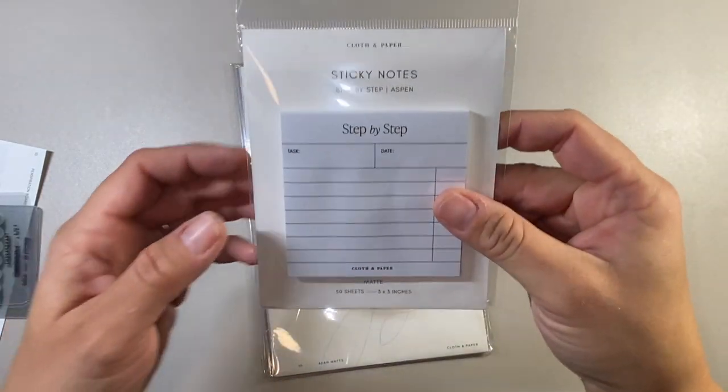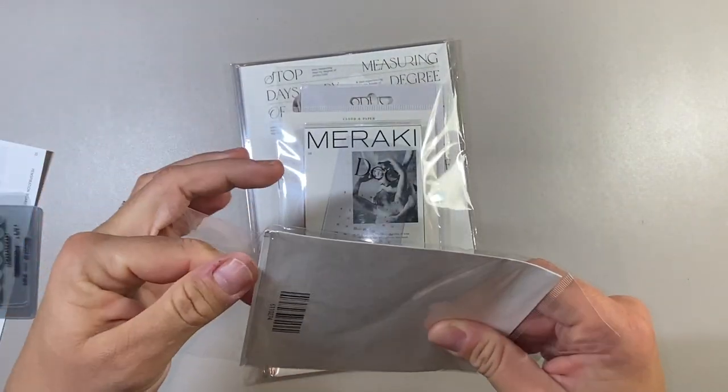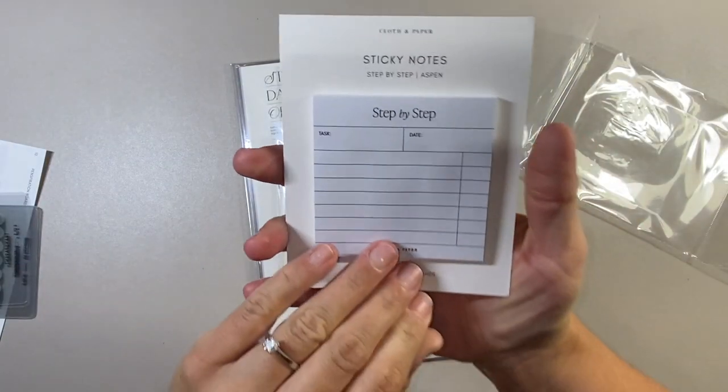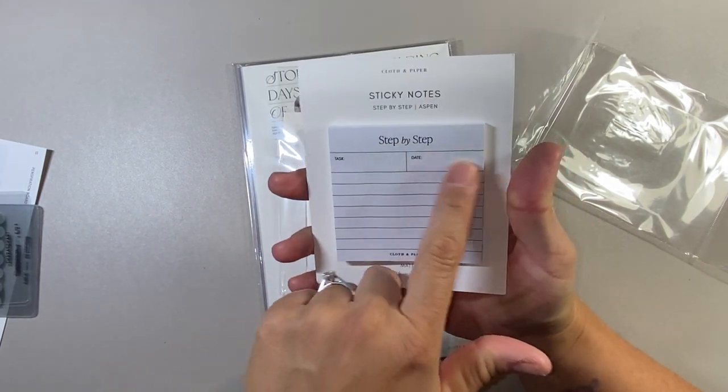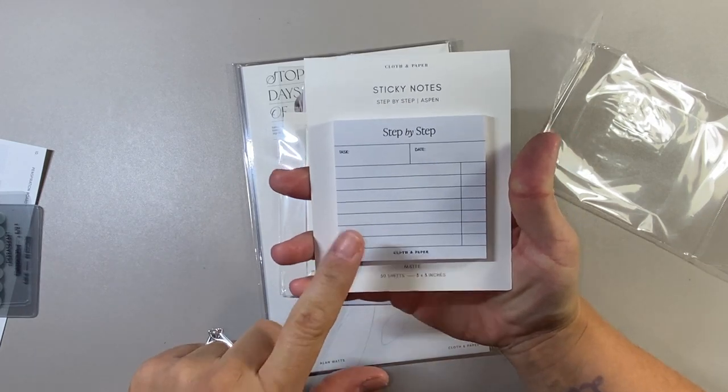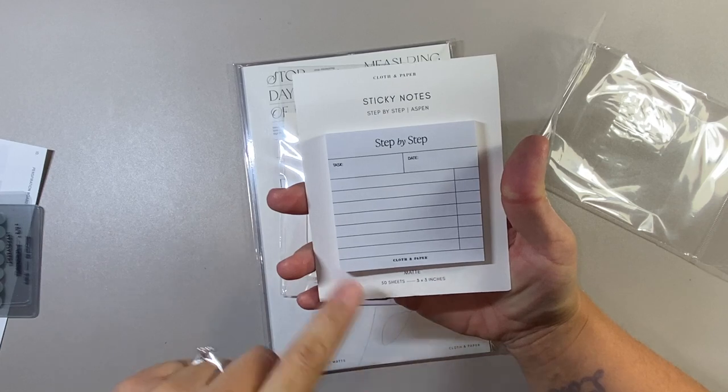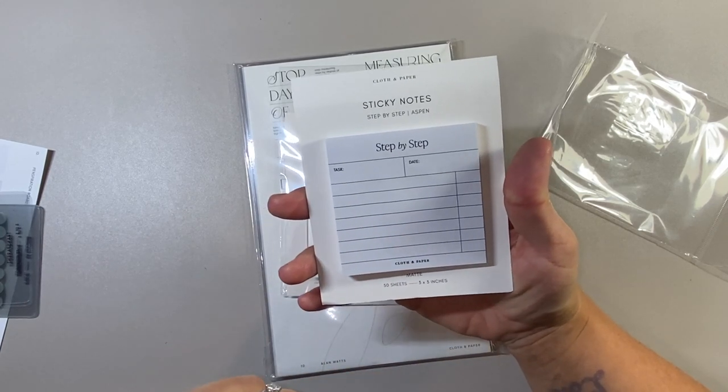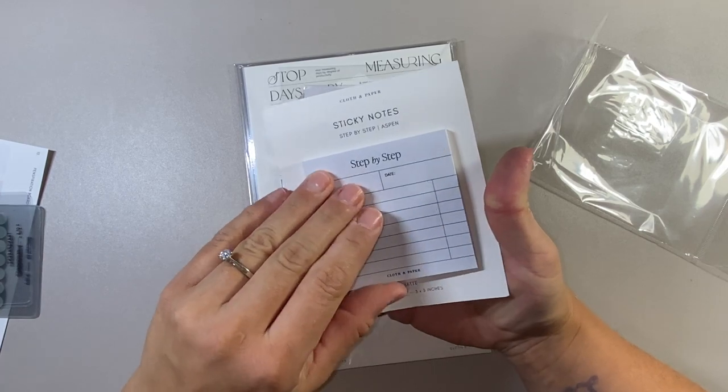So this little sticky notepad came separate. We'll take this out. So all it says is Step-by-Step in the shade Aspen. So you get your task, you can put your date and then you can put all the steps. So I don't mind that because I do have a few goals this month and probably in December that I can stick these in my planner. So that's kind of cute. Good goal sticky notes.